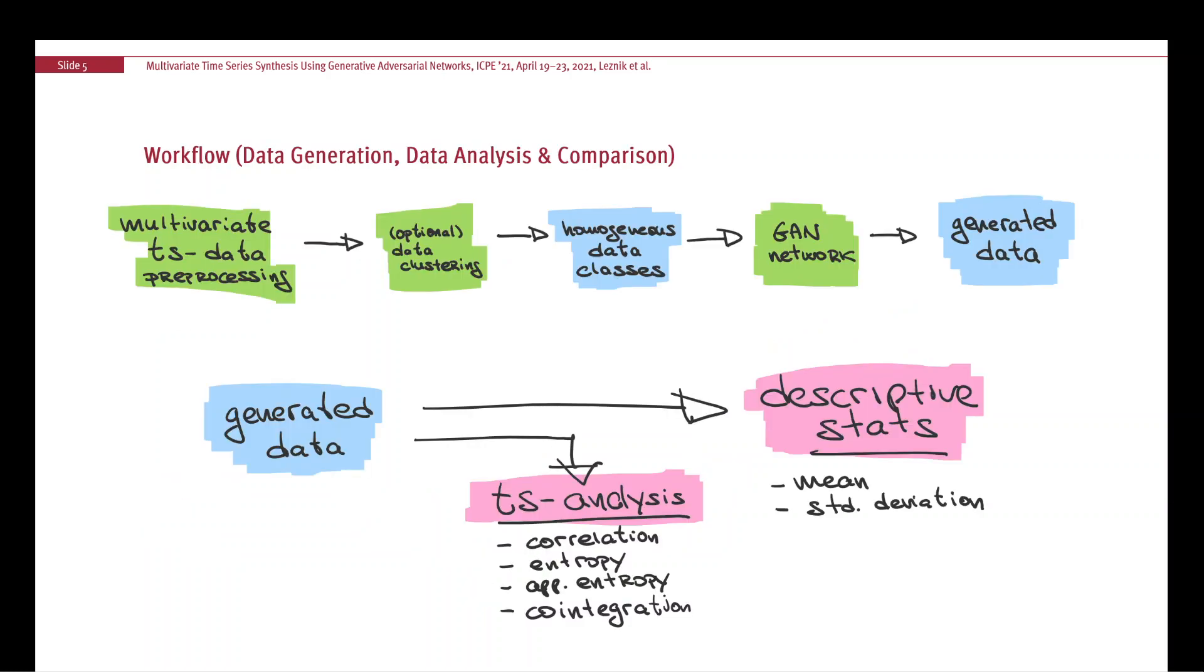How we have done it in our paper? Let's look at the workflow before we talk about the descriptive statistics of the generated data. We start with multivariate time series data. We preprocess it by normalizing the data from 0 to 1 because it's better for machine learning algorithms. Optionally, if you're faced with very heterogeneous data, you could cluster your data, which would lead to homogeneous data classes that you could feed to the GAN network and produce the generated data. This would be the process of data generation where we feed it homogeneous data produced either through clustering or by obtaining homogeneous data.